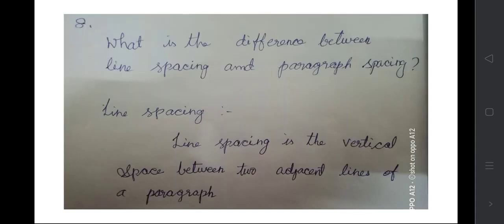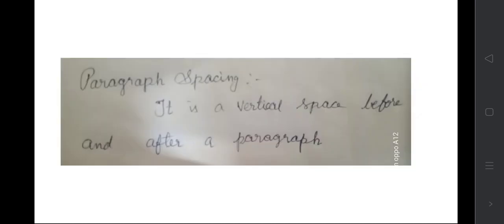What is the difference between line spacing and paragraph spacing? Line spacing is the vertical space between two adjacent lines of a paragraph — just like leaving a line in classwork between two lines. Paragraph spacing is the vertical space before and after a paragraph — the first line starts after some gap, and margins are left on the left and right side.